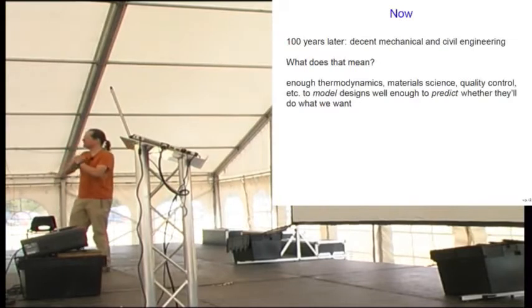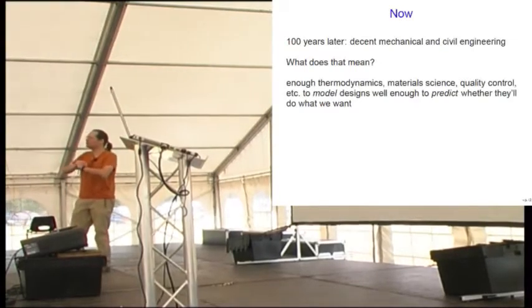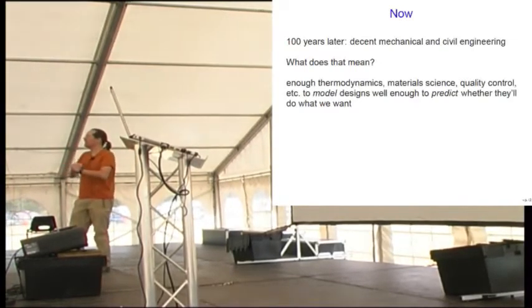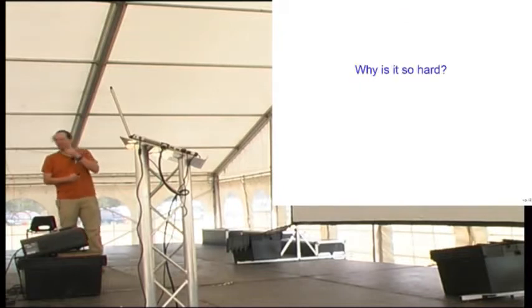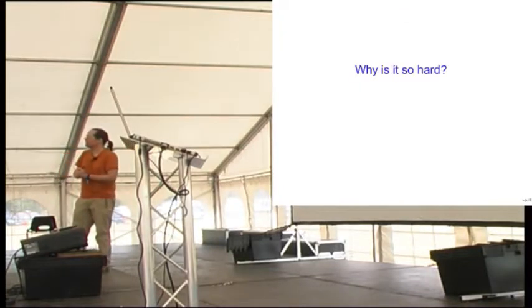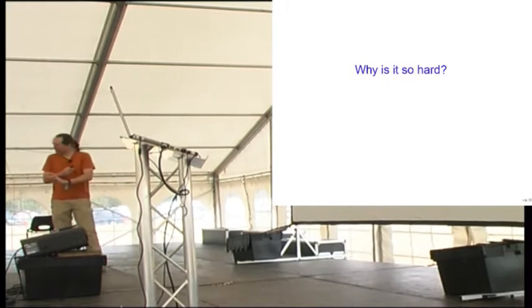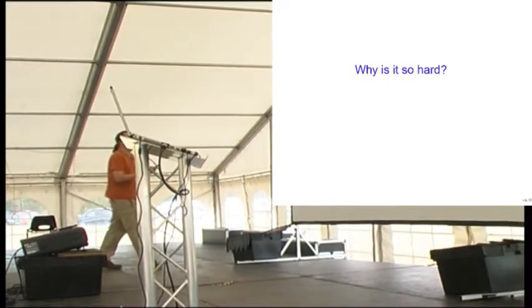And that doesn't happen very often anymore for civil and mechanical engineering. Mostly, a hundred years later, we can build stuff reasonably competently. What does that mean? That means we know enough thermodynamics and material science and quality control management and other such things to predict whether our systems will work properly as intended before we build them. Okay, so for computing, this is easy because we can predict. We are 100% confident that they will not work as intended. But it's not a very satisfactory statement there. So why is it so hard? And here we are, you know, 60 or 70 years after the first computers were built down the road. So there are several reasons. Well, there are many, many, many reasons. But I'm just going to mention a couple of them.